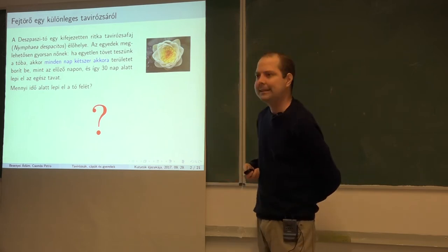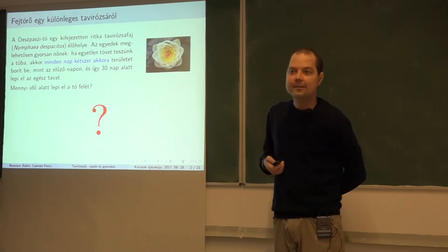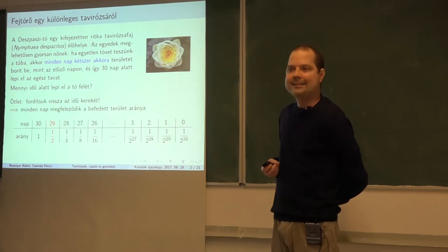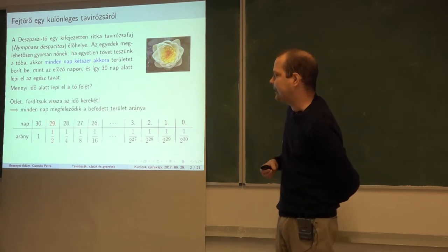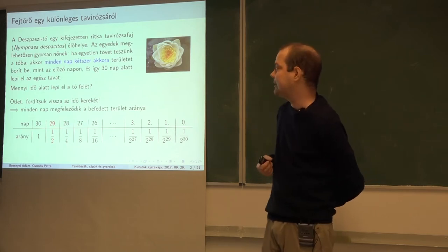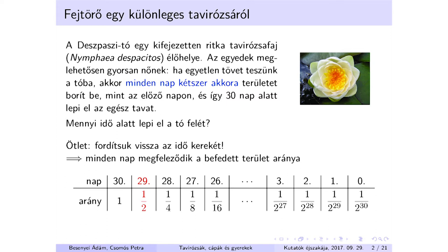Hát gondolom, ezt már mindenki tudja. No, 29, így van. Ugye csak egyszerűen fordítsuk meg az idő kerekét. Ugye, hogy minden nap kétszerakkora területet, ha előre halad az idő, minden nap kétszerakkora, hát visszafelé megfeleződik. Tehát ha a 30. napon benőtte az egészet, akkor az előző nap a felét kell, hogy benője. És így tovább visszamehetünk, hogy a 0. napon jó kicsi részét nőtte be a tónak, 1 per 2 a 30. részét. Vagyis a megfejtés az 1-2ed.